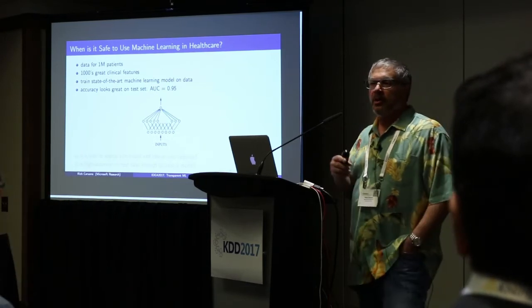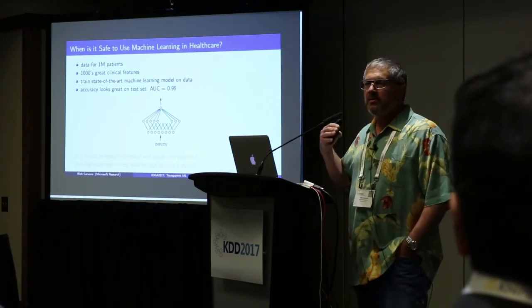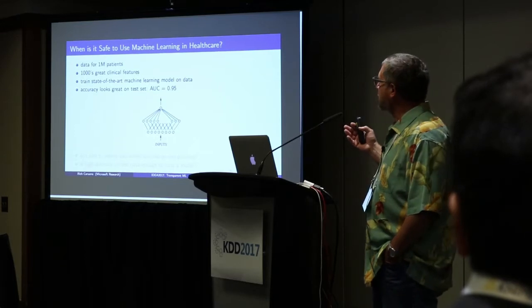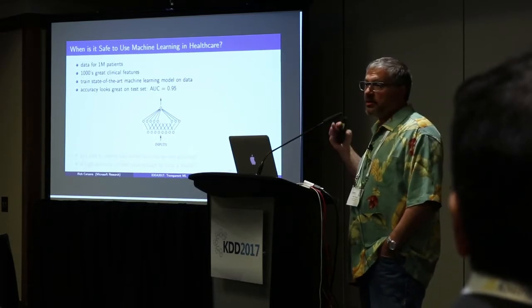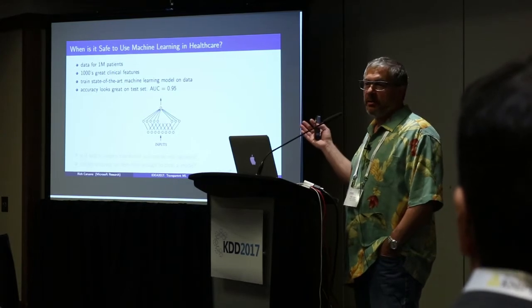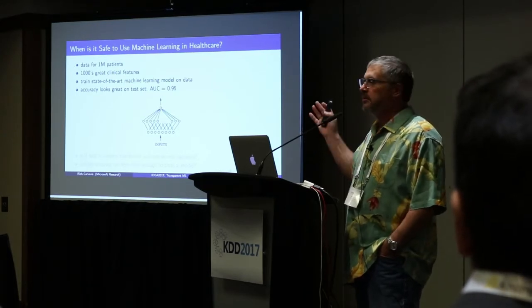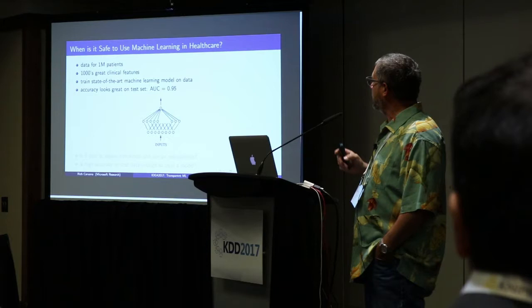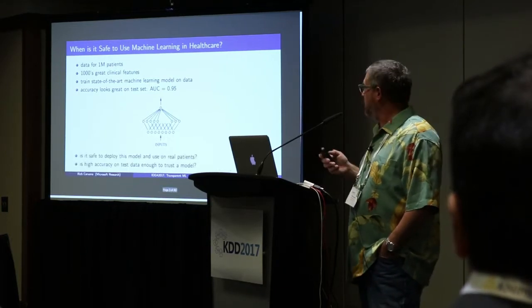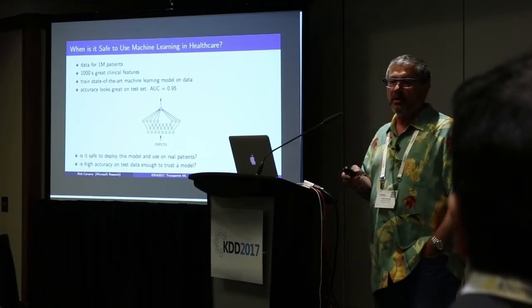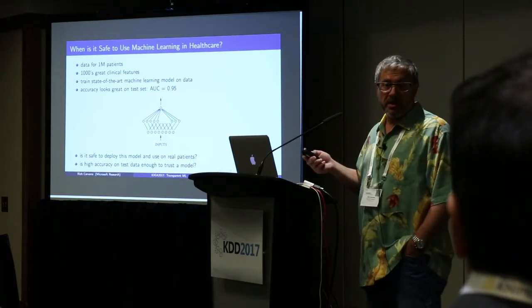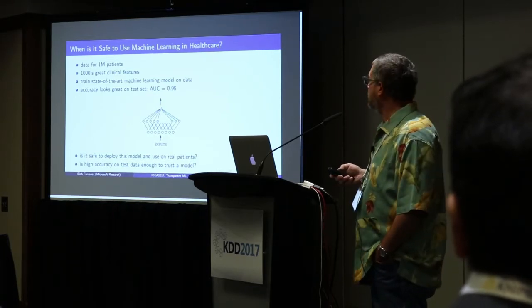Okay, imagine you've got data for a million patients. You've got thousands of great clinical features. You're good at machine learning, you train a state-of-the-art model, and you get an ROC that's out of the roof — 0.95. You just do incredibly well. So you've got this model, and now the question is: is it safe to deploy that model and use it on real people? Is high accuracy on this test set sufficient to trust the model?